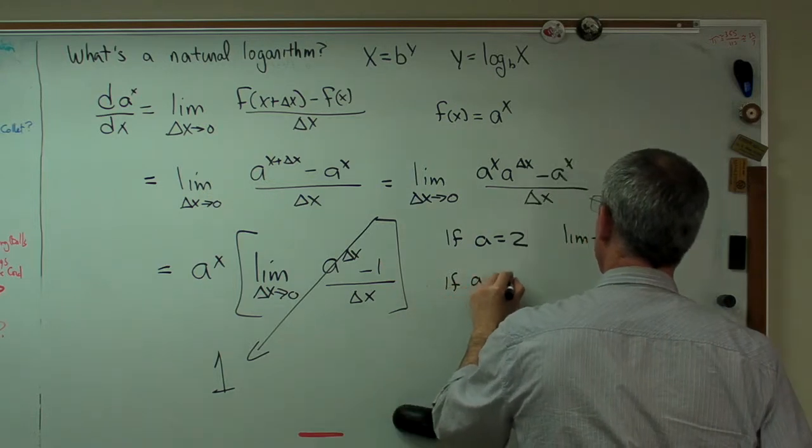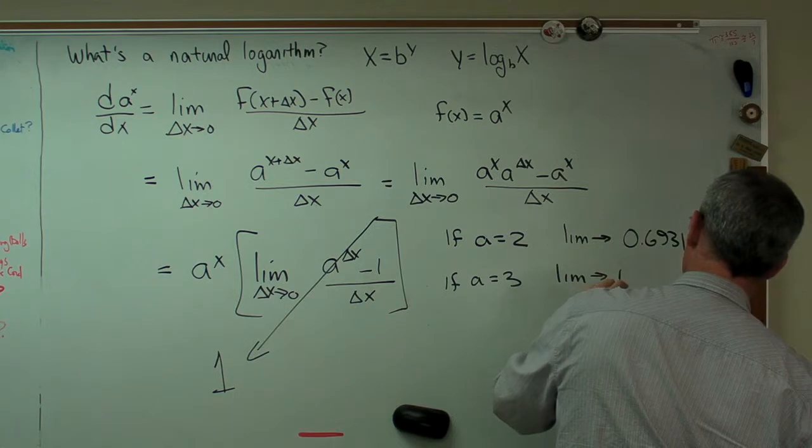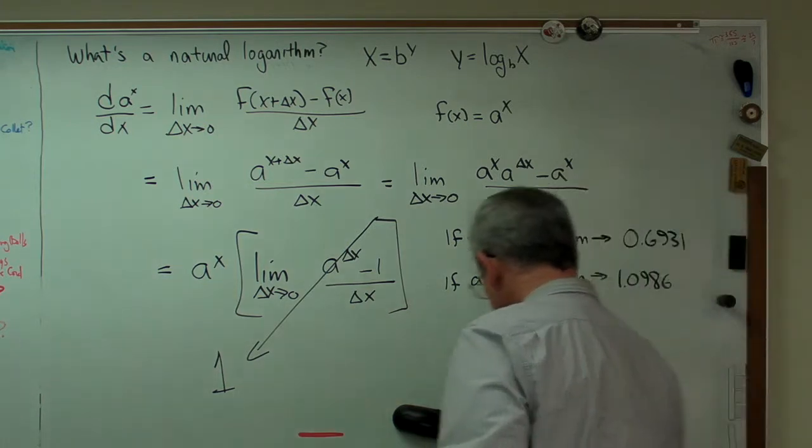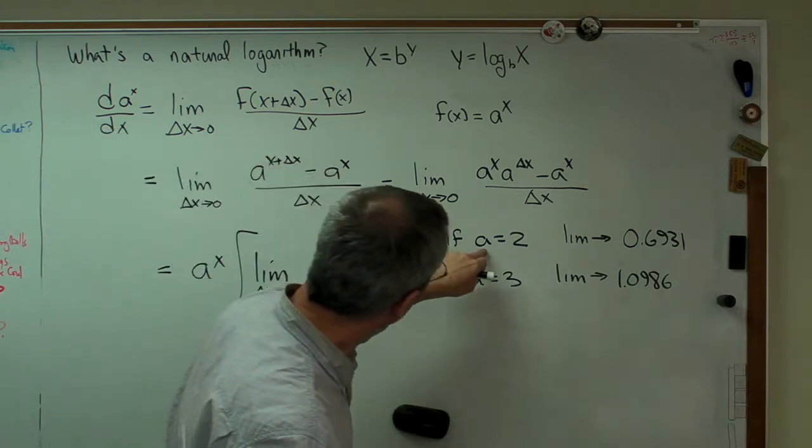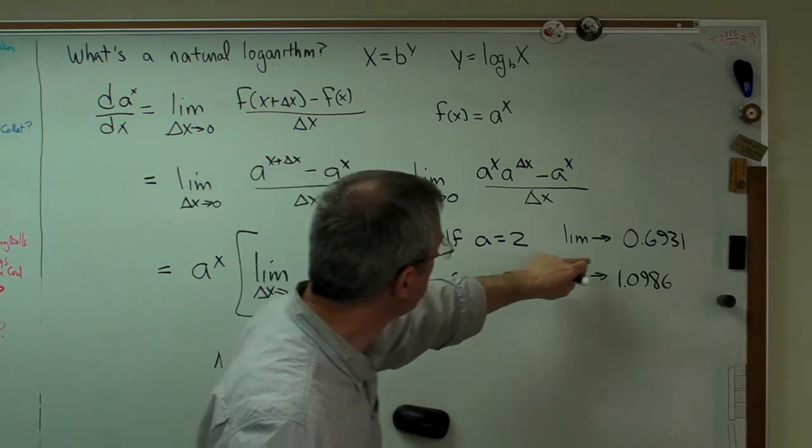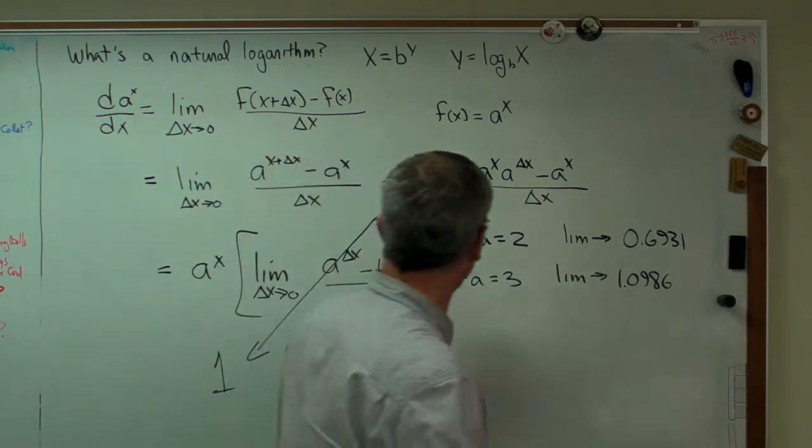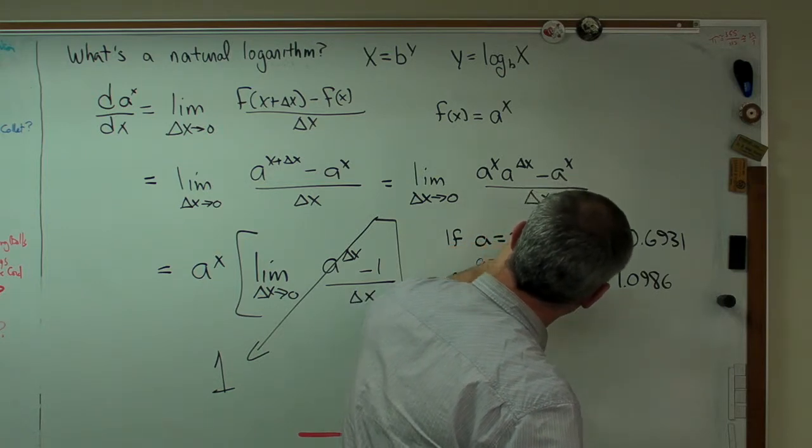If a equals 3, then that limit goes to 1.0986. So, there you go. That's less than e and that's more than e, so it's easy to imagine that if this number was exactly e, if a equals 2.71 and so on...